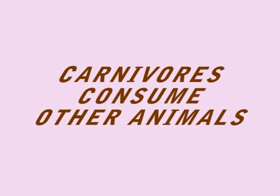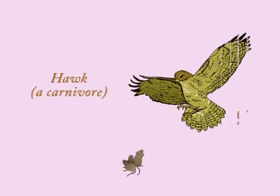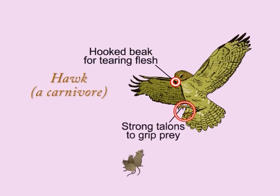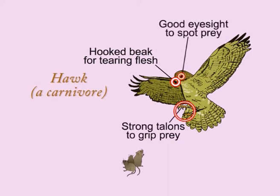Carnivores consume other animals. For example, a hawk has a hooked beak for tearing flesh, strong talons to grip its prey, and good eyesight to spot it from the air.